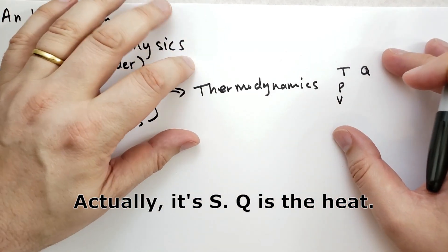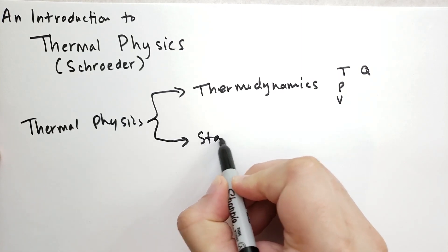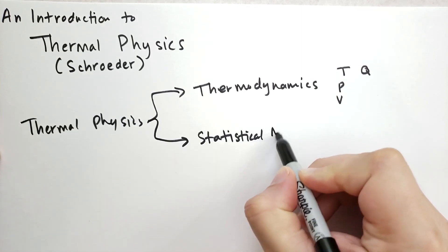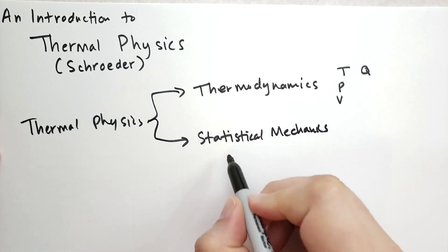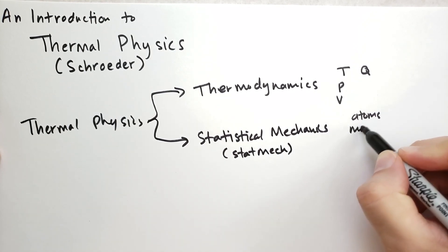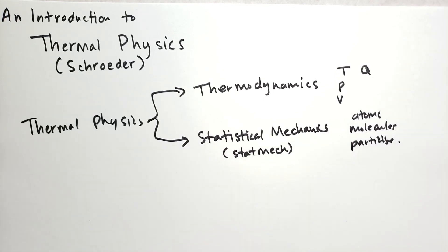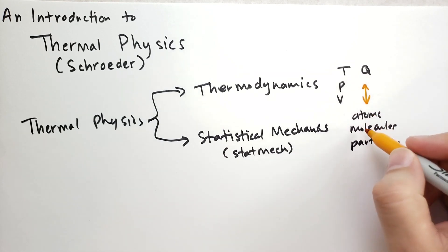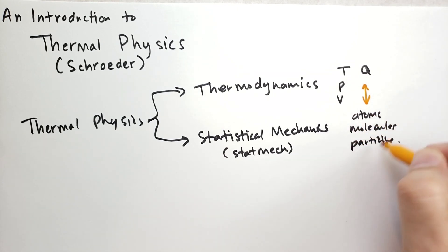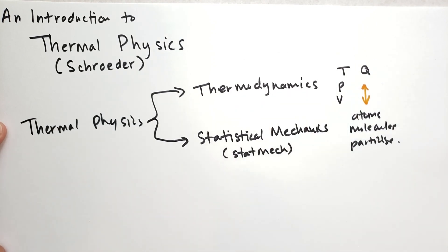Thermodynamics is more relatable to the real world because these are things we can see, touch, and feel. The other area is called statistical mechanics, often abbreviated as STATMEC, and this studies the motion of atoms, molecules, and even subatomic particles. These two fields are related — temperature, even though it is a macro quantity, has a micro meaning. If you want to learn thermal physics, you really need to understand both of these separately and together.